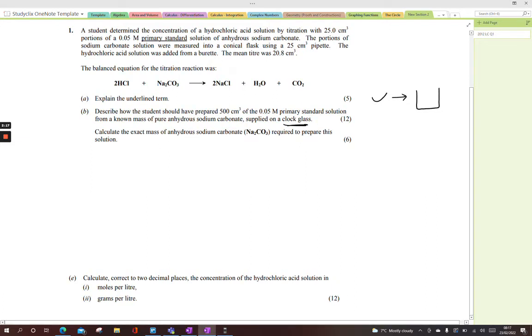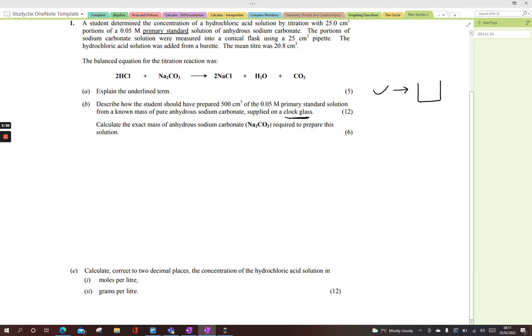Transfer your anhydrous sodium carbonate into a beaker, add deionized water and stir to dissolve. Then transfer that into a 500 cm³ volumetric flask. Add your washings or rinsings to within one centimeter of the calibration mark. Then using a dropper, add deionized water until the bottom of the meniscus rests on the calibration mark, read at eye level.